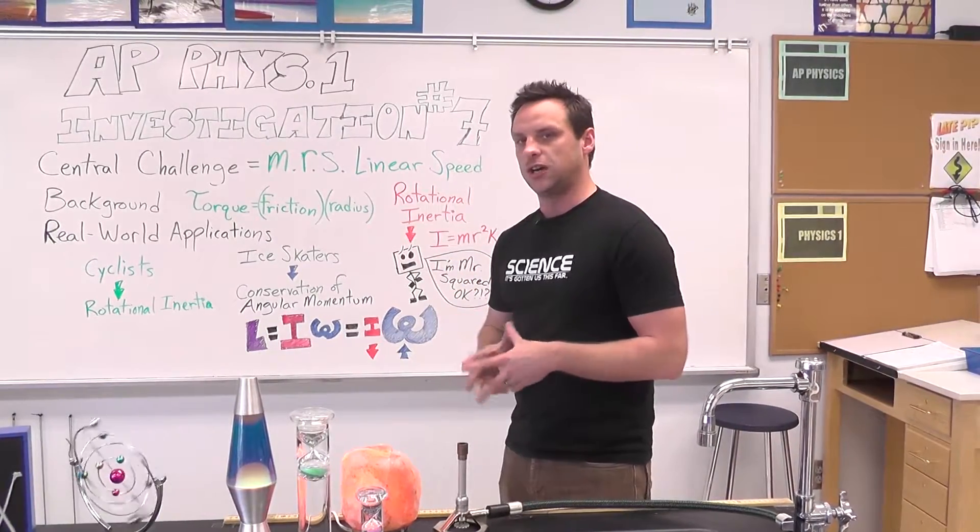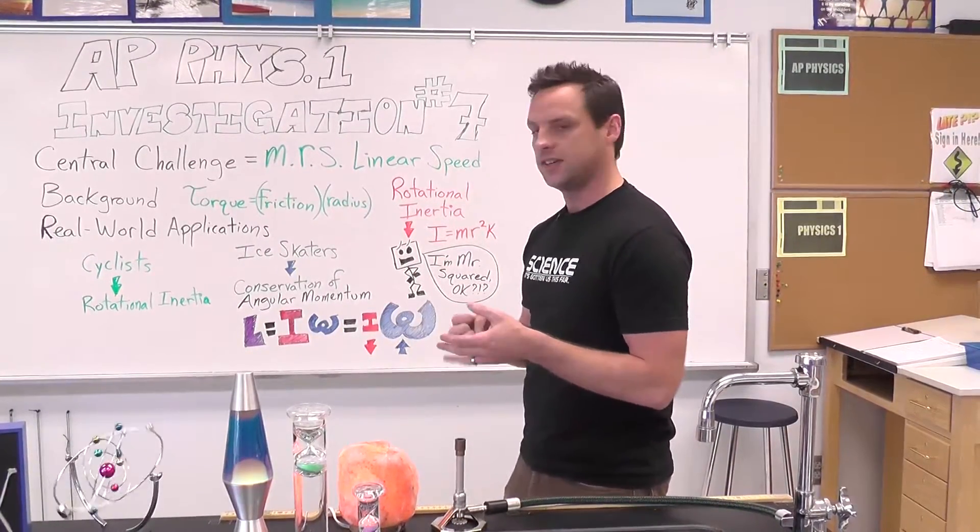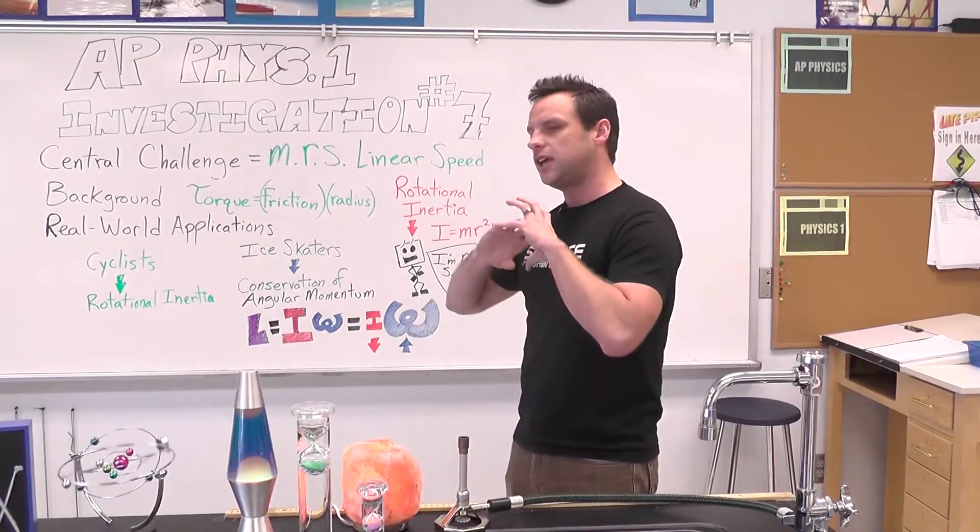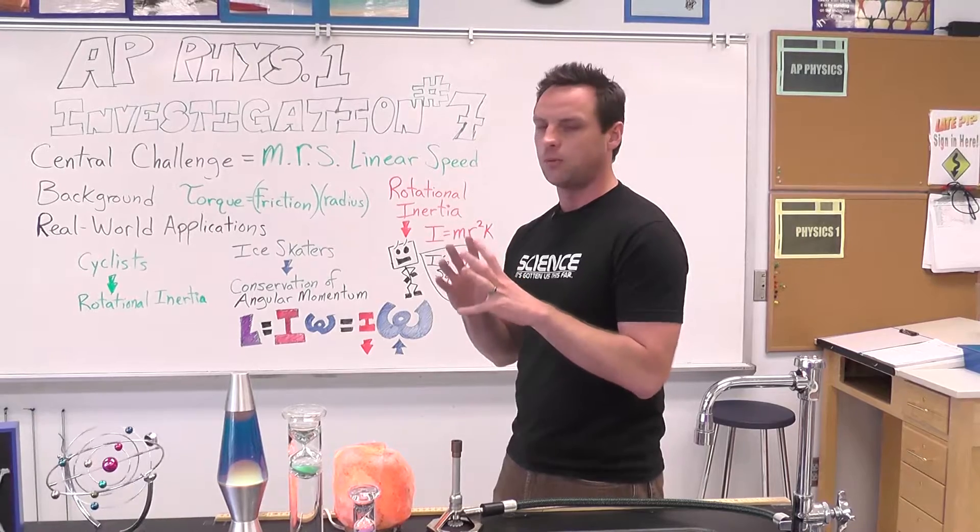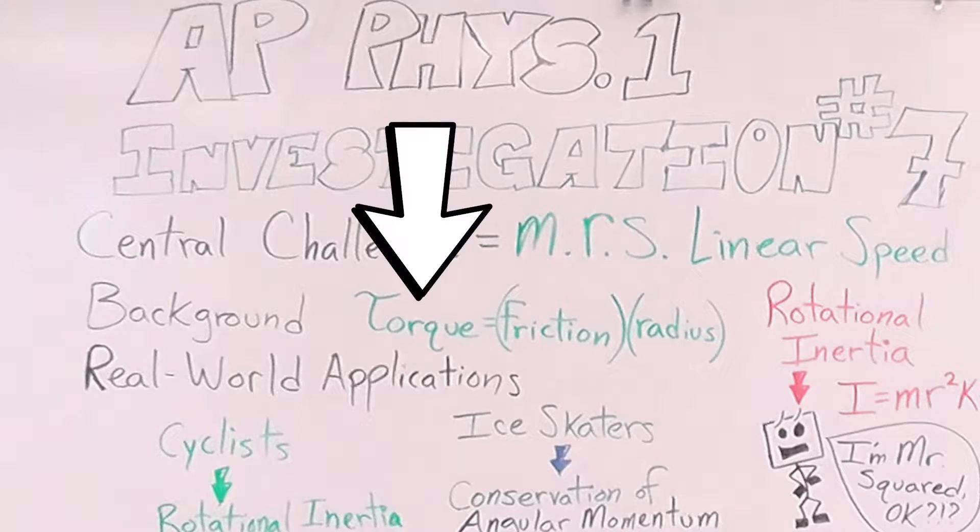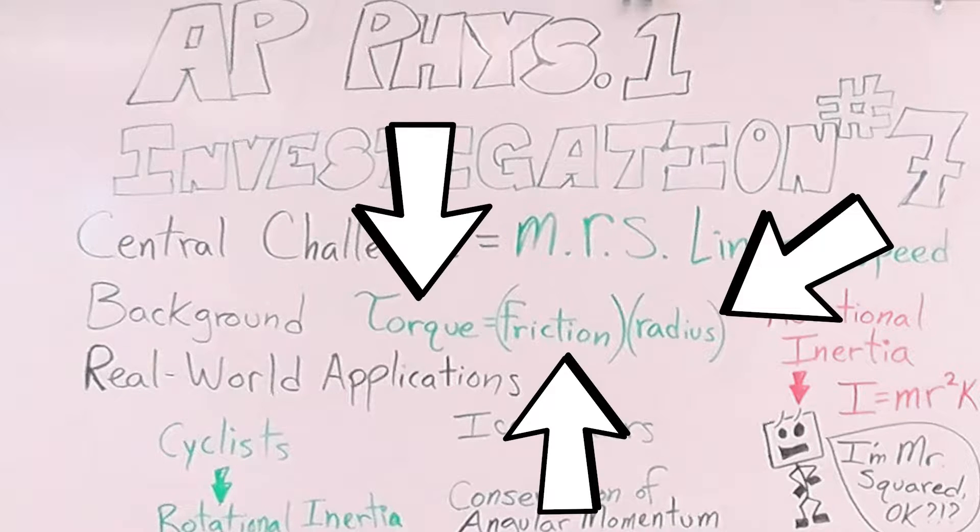Some background information here, you're going to get more in your physics class, but to get something to roll, you need to put a torque on it. Without a torque, it's not going to roll, it's just going to skid down your ramp. The torque comes from friction force that gets applied at the radius of the ball, or the hoop, or whatever's rolling.